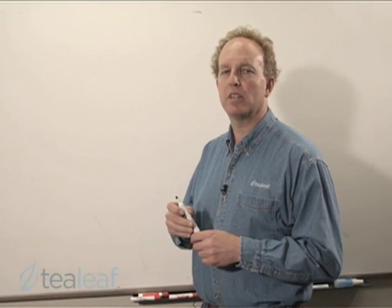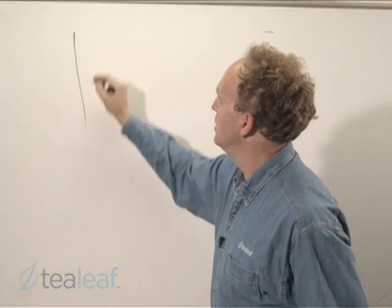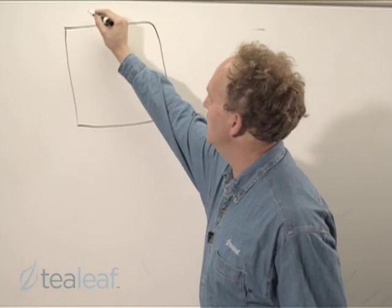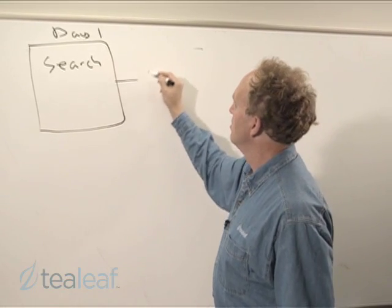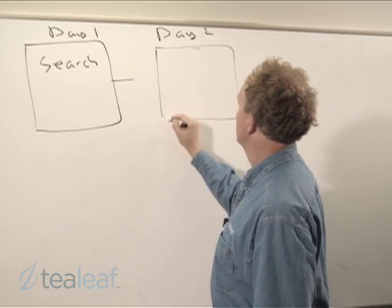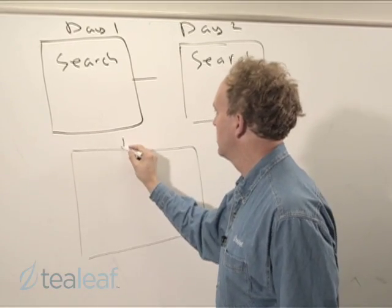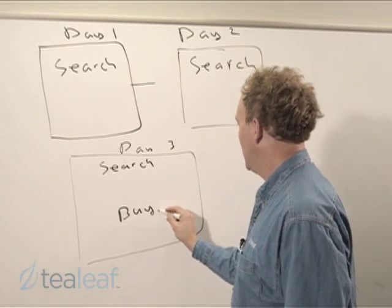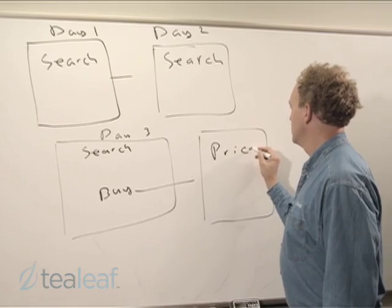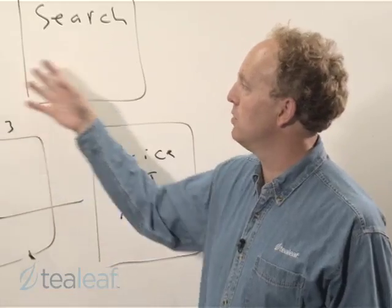With T-Leaf 7.0, we started to capitalize on the complete data set that we're capturing to truly understand visitor behavior — understanding that a web process doesn't start and end within a single session; it may take multiple sessions. In my flight example, where I attempted to buy a ticket, that was a multi-step process. On day one, I searched and tried to come up with a reasonable list of alternatives of when I could fly. On day two, I came back again and did more searching. On day three, I did the search again, attempted to buy, and got that error message — price not available. With T-Leaf 7.0, we have the ability to understand a business process across multiple visits. We call that going from visit to visitor.